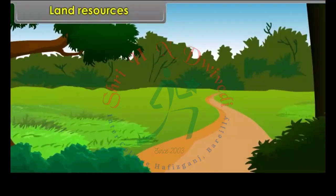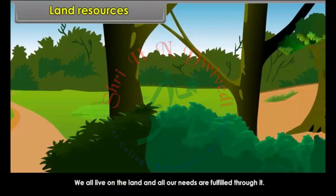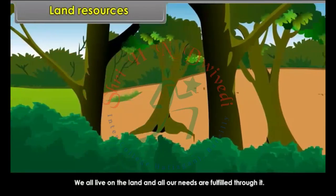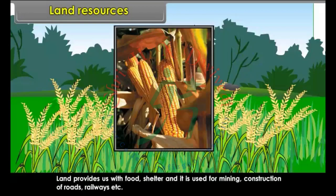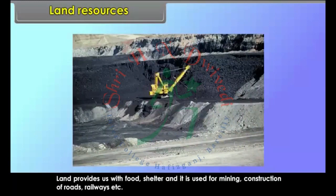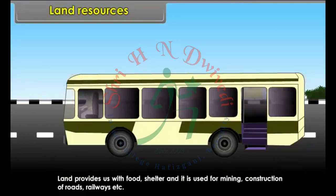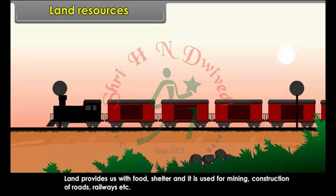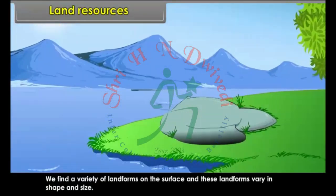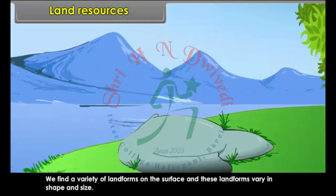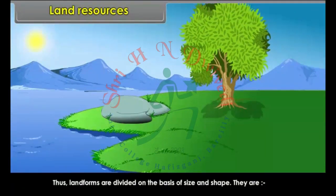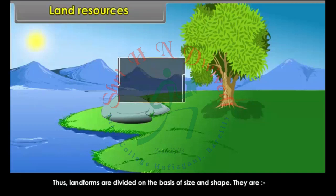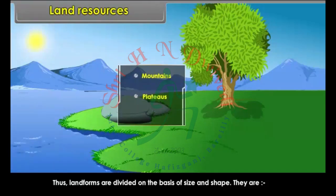Land Resources. We all live on the land and all our needs are fulfilled through it. Land provides us with food, shelter, and it is used for mining, construction of roads, railways, etc. We find a variety of landforms on the surface and these landforms vary in shape and size. Landforms are divided on the basis of size and shape — they are mountains, plateaus and plains.